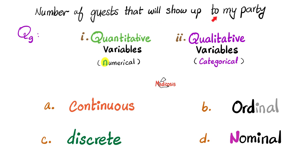Next, number of guests that will show up to my party. Quantitative or qualitative? Well, I can count them. It could be one person, two persons, three, five, ten, twelve, etc. So these are numbers. So quantitative variables. Continuous or discrete? Well, I cannot have 2.5 visitors. They have to be actual numbers. So these are discrete. It could be one, it could be two, it could be seven, etc. But not 17.3522.